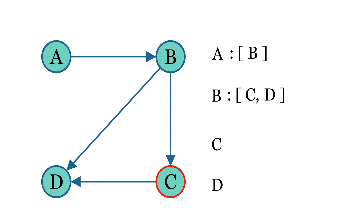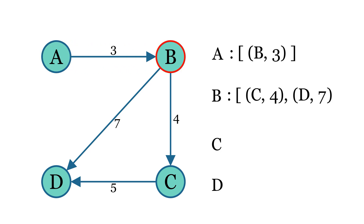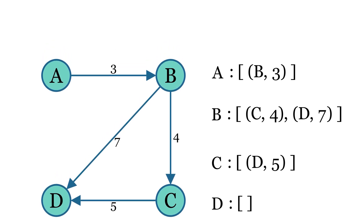This means we only keep track of the nodes that can be reached directly from the current node. If the graph is weighted, we simply pair each edge in the adjacency list with its corresponding weight, so each connection shows both the destination node and the cost associated with that edge. The space complexity for an adjacency list is O(N + E), because for each node we only store its direct connections — O(N) for the nodes and O(E) for the edges. In an undirected graph, each edge is stored twice, while in a directed graph each edge is stored once.